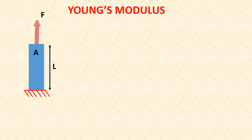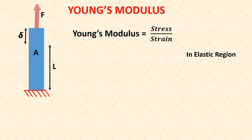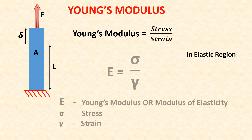Young's modulus, or modulus of elasticity, is equal to stress over strain in the elastic region. Young's modulus notation is E. Therefore E is equal to sigma over gamma.